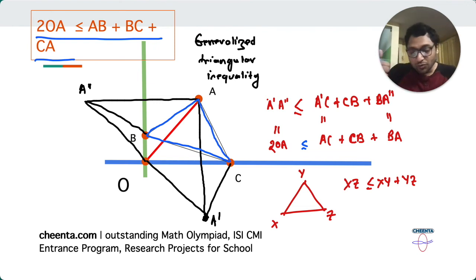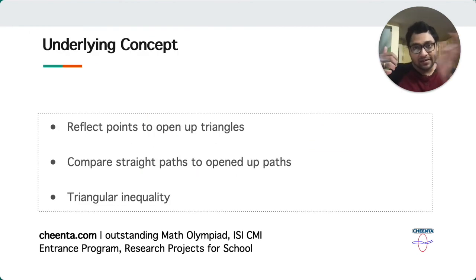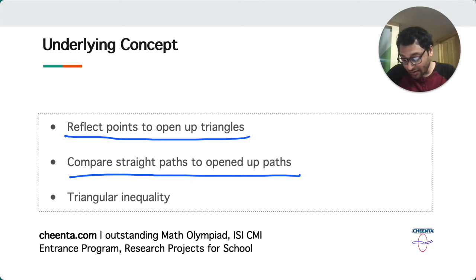So we used two things. We started by reflecting. And the reason we did that is we wanted to talk about opening up triangles. That's a very important concept. In fact, it would also apply to quadrilaterals. And then we wanted to use the generalized triangle inequality to compare straight paths with opened up paths. So these three ideas that we learned using this problem will be useful in other problems as well.